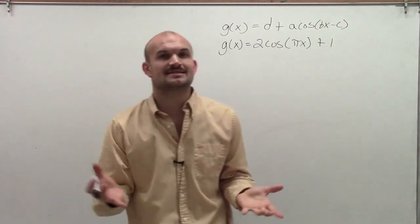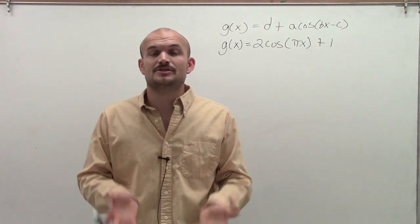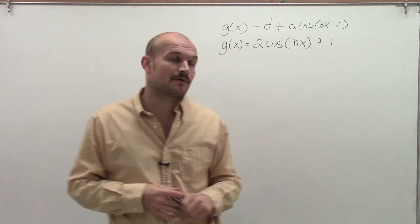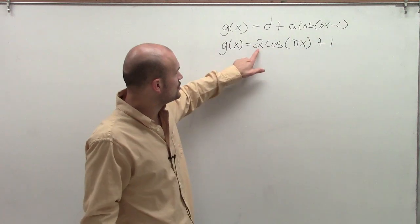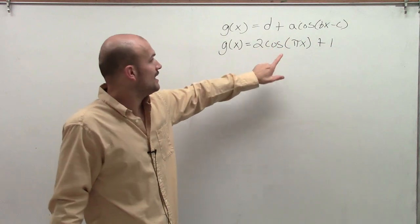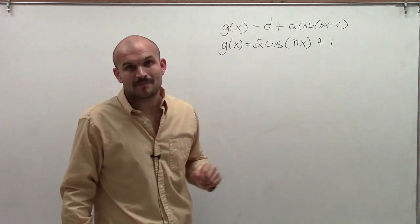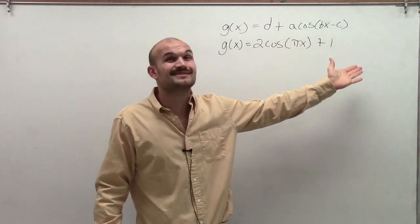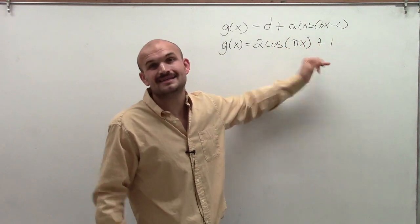And remember, if you look at transformations of a function, d is going to be shifting my graph up or down on the y-axis, where 2 is going to be my a, and pi is going to be my b. c, in this case, is 0 as I'm not adding or subtracting inside of my function.